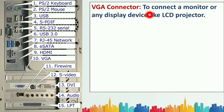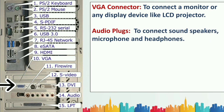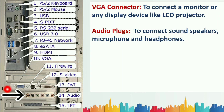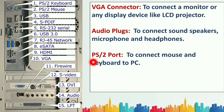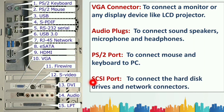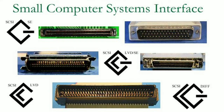VGA connector — Video Graphics Array — is used to connect a monitor or any display device like LCD projectors. Audio plugs are used to connect sound speakers, microphones, and headsets. PS/2 ports — Personal System 2 — are used to connect mouse and keyboard to the PC. SCSI — Small Computer System Interface — port is used to connect hard disk drives and network connectors.